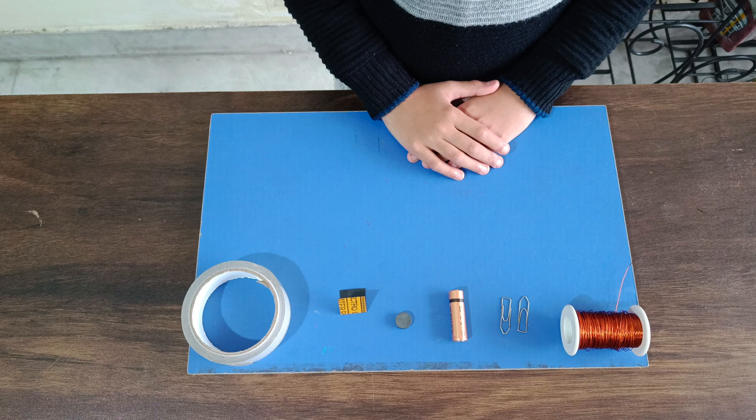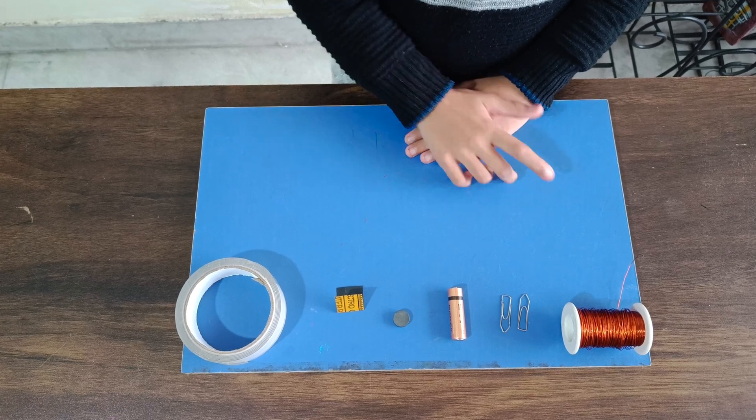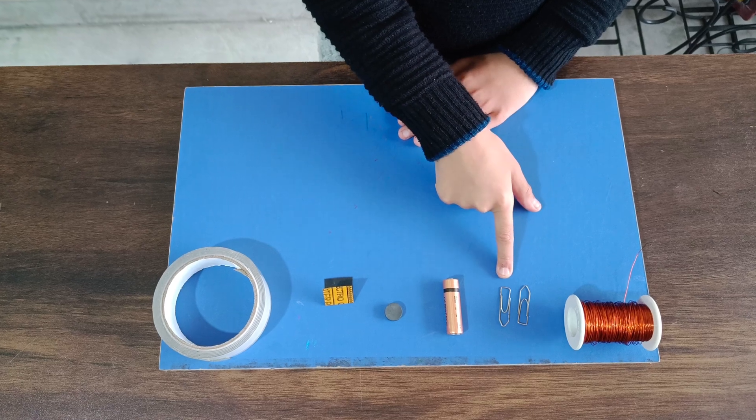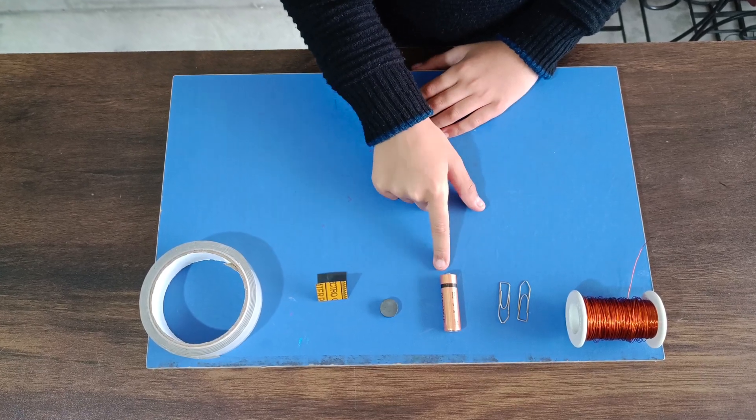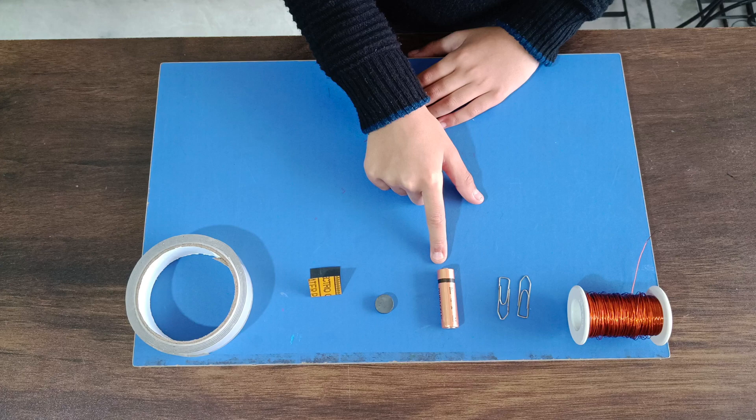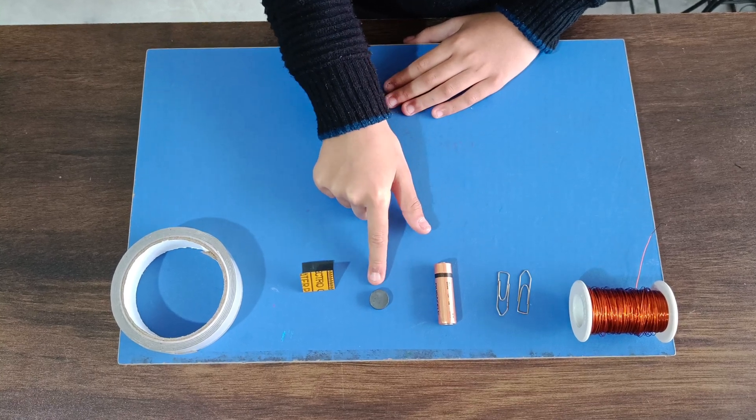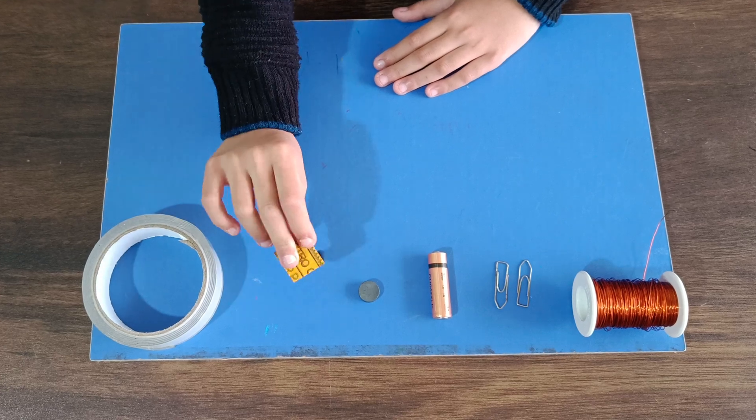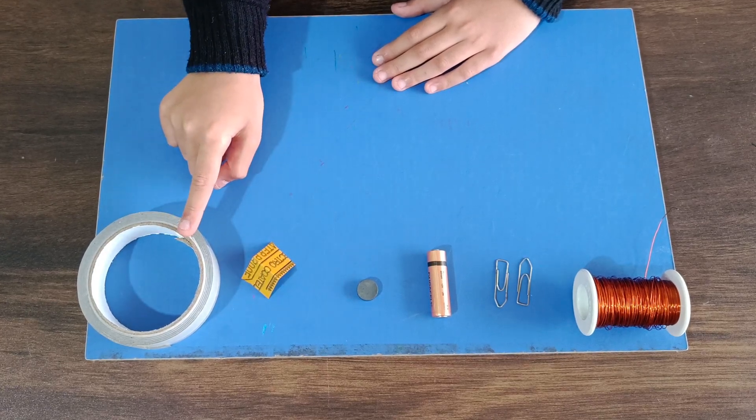To make the motor, we need a few things: copper wire of 0.5 mm thickness, two paper clips of metal, one AA battery, one round magnet, and a piece of sandpaper. We also need a strong tape.